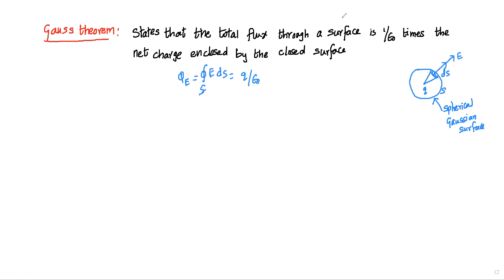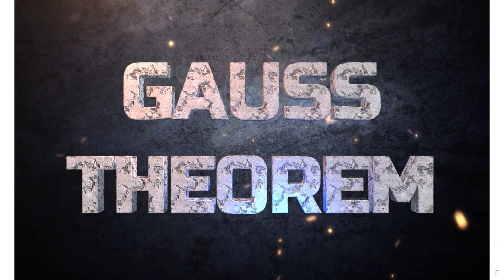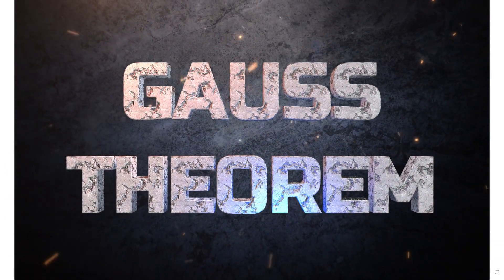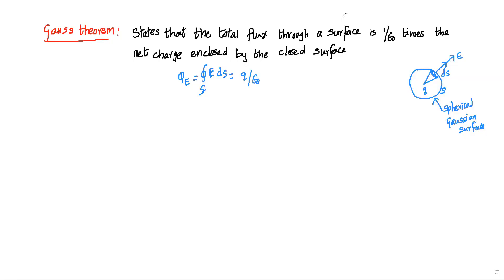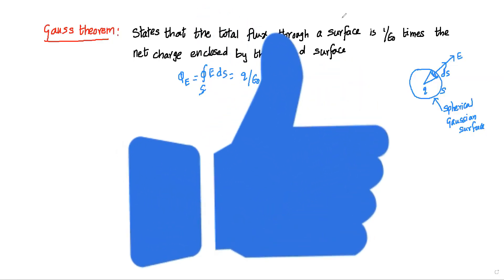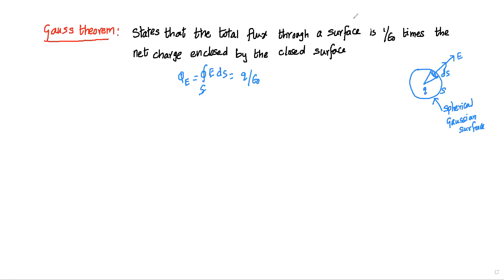Welcome to Physics Caught on Camera, a continuous learning series for Class 12. In this video we are learning about Gauss theorem. Gauss theorem states that the total flux through a surface is 1 by epsilon naught times the net charge enclosed by the closed surface. There is a spherical Gaussian surface in which ds is a component.